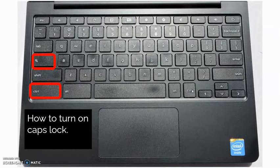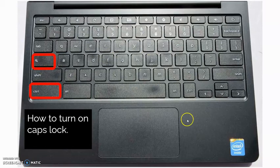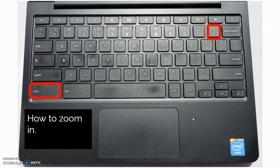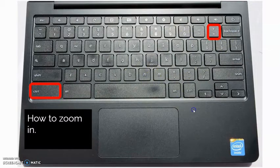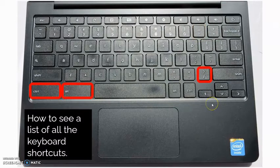You can turn Caps Lock on by pressing Control and the magnifying glass at the same time. If you don't want to turn Caps Lock on, press and hold Shift as you're typing to capitalize letters. If you need to see your screen a little better, you can zoom in by hitting Control Plus — you need to be in a Chrome browser for that to work. You can also zoom out with Control Minus. To see a full list of all keyboard shortcuts available on the Chromebook, press Control, Alt, and the question mark, and a screen will pop up with further examples. The ones listed here are the most popular and most often used.